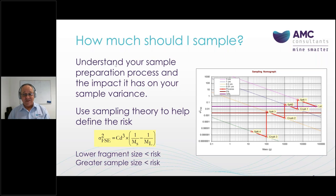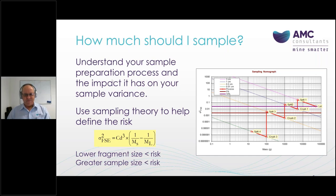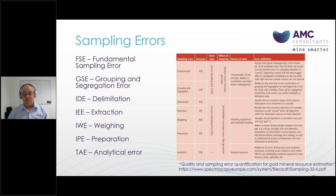The idea is pretty simple: if you've got a smaller fragment size you'll end up with a lower risk of getting it wrong, and if you've got a greater sample size you're more likely to get it right. But how do these sampling errors work and why are they important? We have a whole raft of them and they are all important because they're all additive — every error made in the sampling process accumulates as you go through. So if you start with a bad sample it's only going to get worse.